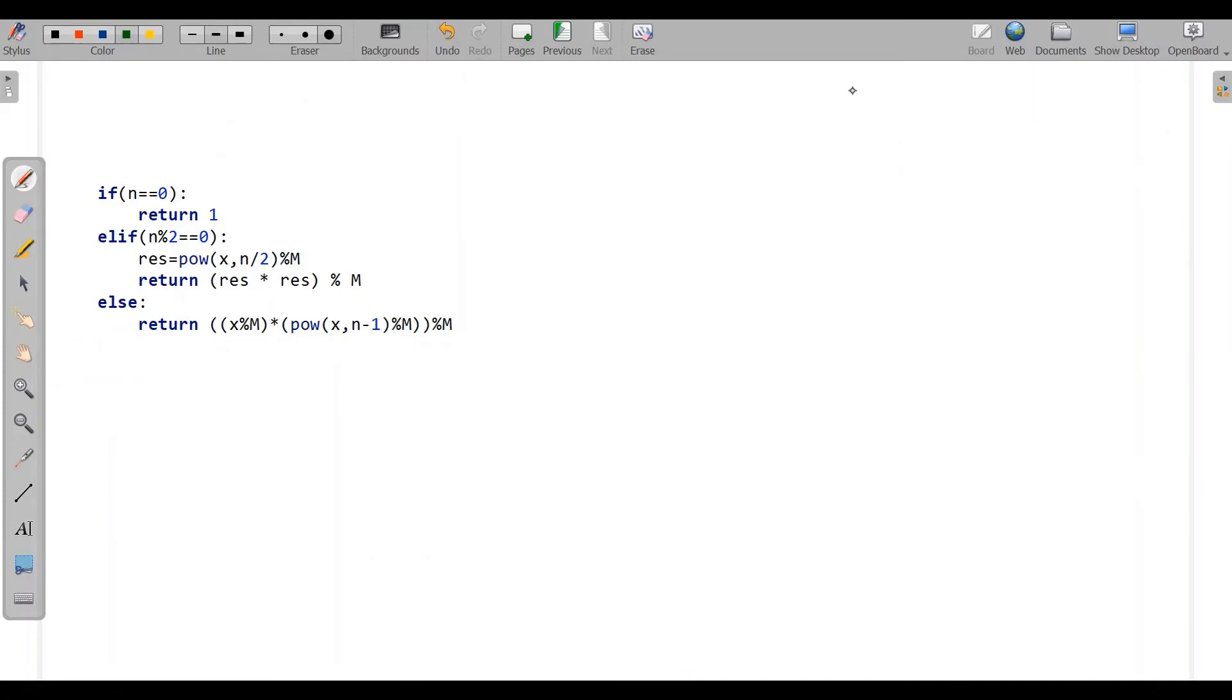Here we will take an example. Let's say x is equal to 7, n is equal to, let's take somewhat bigger, 8, and M will be 9. So when I calculate for 7 to the power of 8 mod 9, first it will check for n whether n is equal to 0. No. So it will go to even number as 8 is an even number. So here it will distribute to 7 to the power of 4 mod 9. Then again it will check n is equal to 4 which is an even number.